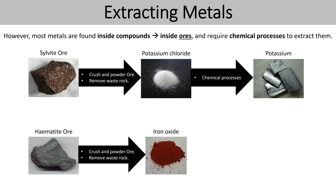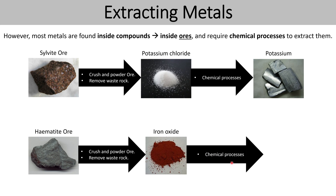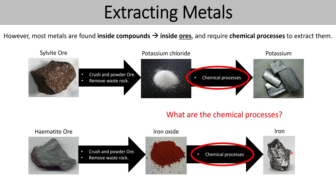Iron oxide doesn't quite have the properties of iron. When you normally consider iron, you think of a big girder or a spoon made of iron. However, iron oxide is a brittle orange-brownish powder that doesn't conduct electricity whilst solid and has none of the other properties of iron. So therefore we need to remove the oxygen from it to get pure iron, and again, we're going to carry out some chemical processes.